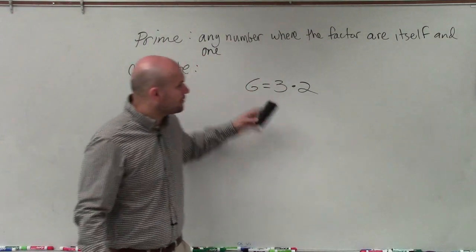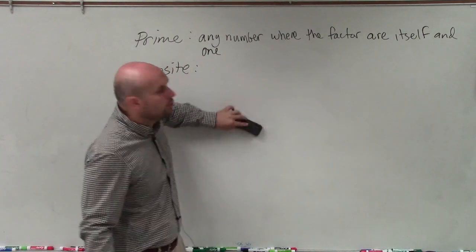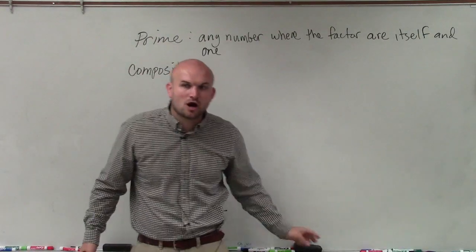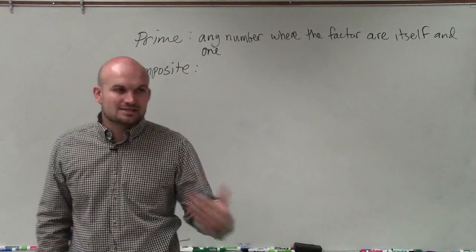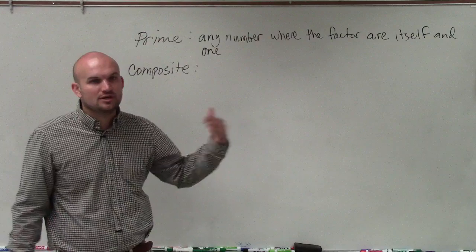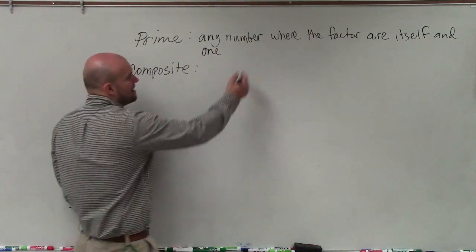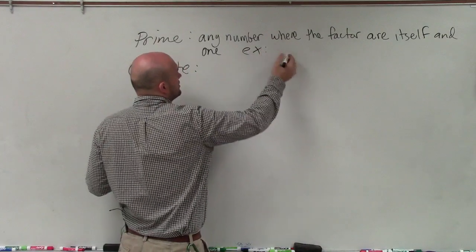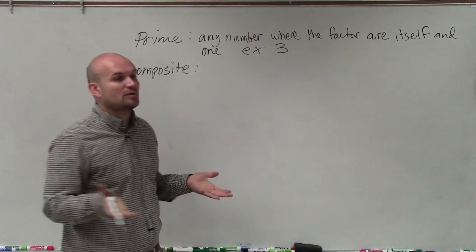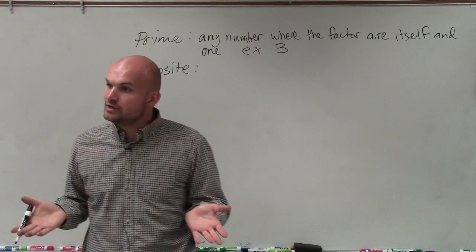So when we're talking about prime numbers, when I say the only two factors of a prime number are itself and one, that means no other number can be evenly divided into that number. For example, the number three is a prime number. The only factors of three are three and one.